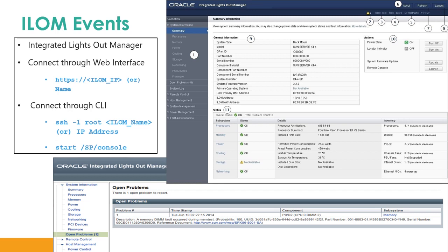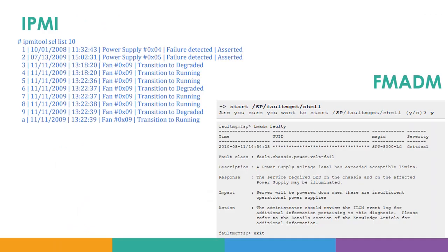The ILOM can be used to monitor storage servers and compute servers. You can also check the power distribution unit (PDU), which gives you the dashboard about temperature and power status. Similar to ILOM, the IPMI tool gives you the status of various components and the authority to remotely manage those devices. You can use the ipmi tool command to list all alerts and check the status of various components.